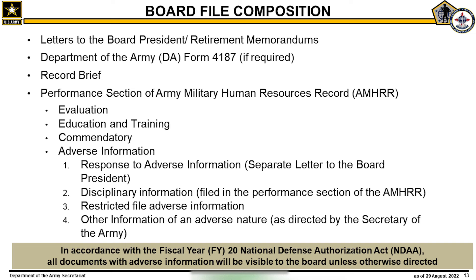The four parts are: response to adverse information, disciplinary information, restricted information, and other information of an adverse nature. All documents with adverse information and substantiated investigations of an adverse nature will be visible to the Promotion Selection Boards in accordance with Title X U.S. Code 615 and Title X U.S. Code 14-107, as implemented in the Fiscal Year 2020 National Defense Authorization Act, or NDAA.